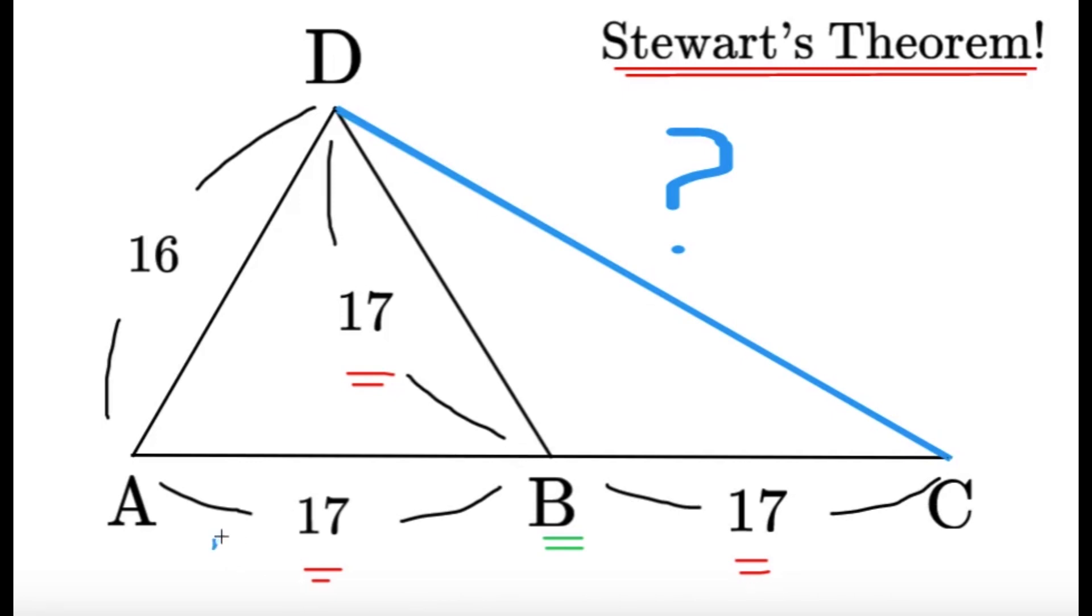Now, we can easily assign values. For example, M here equals 17, N here equals 17, and then A would be the entire thing. So A here would be the entire thing, which would equal 34. D here would equal 17, and then we can assign C here, and then B here. So we can use Stewart's theorem to simplify this into an equation, and then we can easily solve for B.